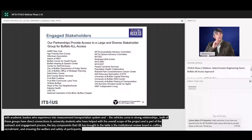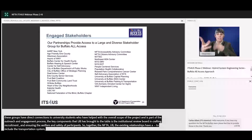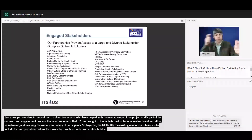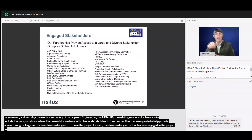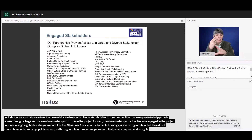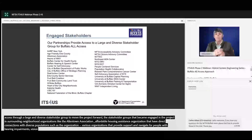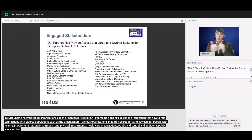Together, BNMC, NFTA, and UB used existing relationships and an understanding of shared goals to help create a more inclusive transportation system. The partnerships we all have with diverse stakeholders and the committees that we operate help provide us access to a large and diverse stakeholder group to move the Buffalo All Access project forward. The stakeholder groups that became engaged in this project include surrounding neighborhood organizations like the Allentown Association and the Fruit Belt Coalition, affordable housing assistance organizations such as Heart of the City Neighborhoods, various organizations that provide support and advocacy for people with hearing, vision, and physical impairments, healthcare organizations, public officials, and additional public agencies that all contributed to the development of the project and can play a role in its sustainability and replicability.